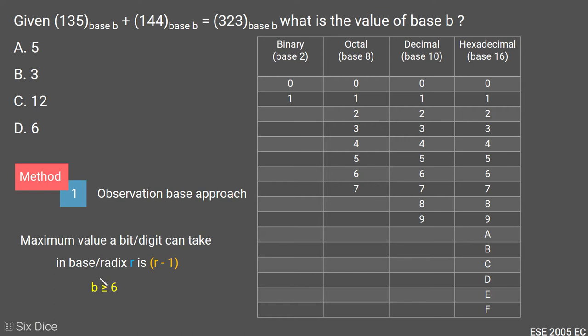B should be greater than or equal to 6 because here we have a maximum value of 5. With that logic, options A and B are eliminated. We end up with option C and option D.